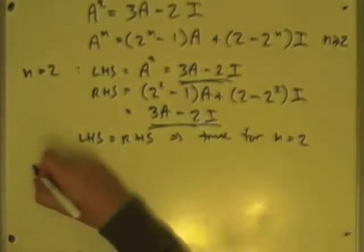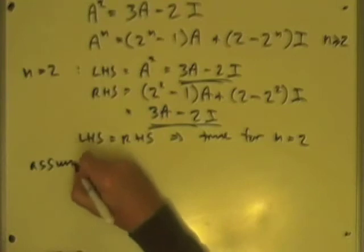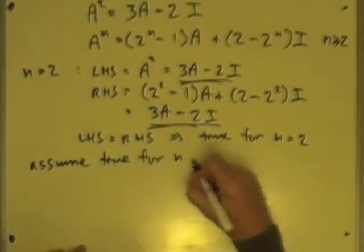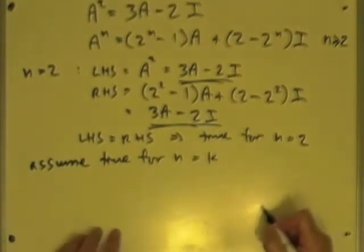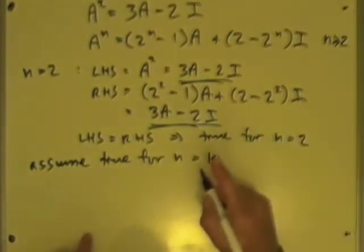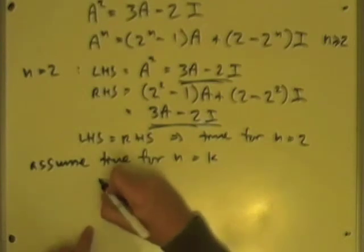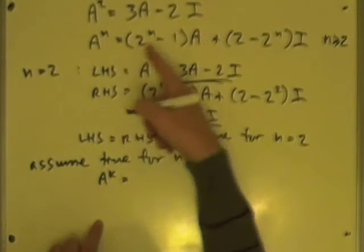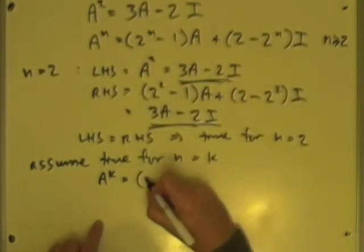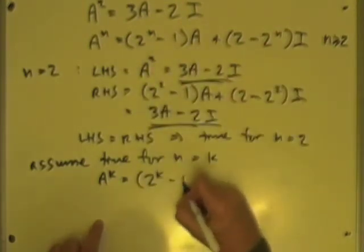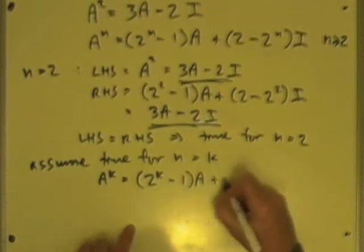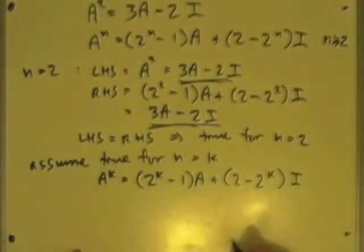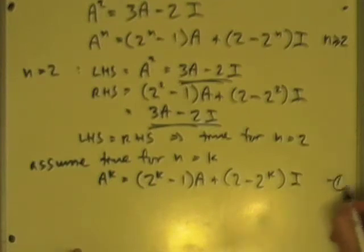Now the assumption: assume it is true for some arbitrary point k along the series, which means that if it were true there, I would have A to the k equals 2 to the k minus 1 times A, plus 2 minus 2 to the k, times the identity element. Call that equation 1.